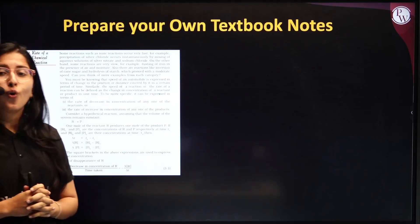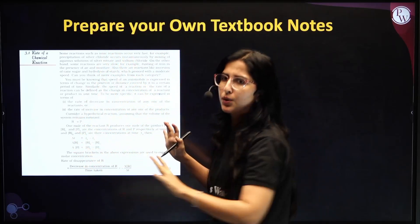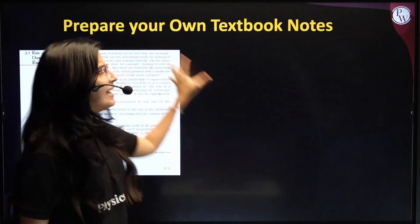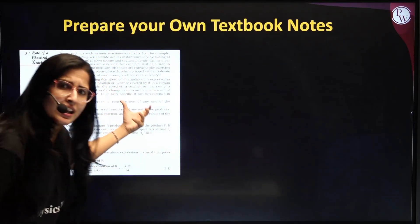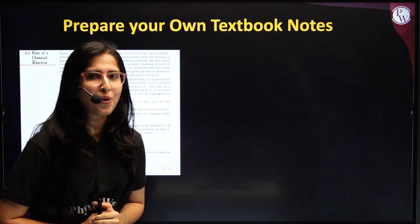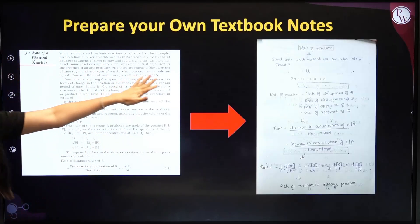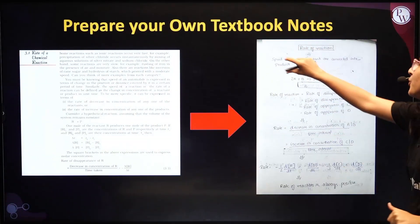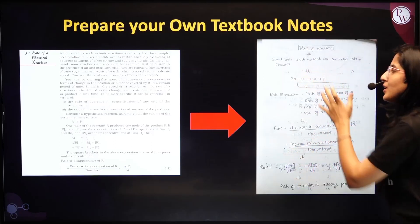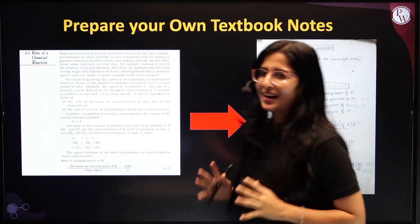Next is preparing your own textbook notes. Go to your textbook, go to the topic — for example, Rate of Chemical Reaction. While studying, you have to prepare your own notes. The format can be: the topic name, a short meaning or definition, and then the equation. You can write your notes in this structured form.